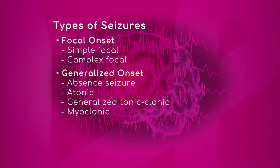Focal onset means that the seizure originates in one part of the brain, and depending on which part of the brain that is, you will see a complex symptomatology or signs of that seizure. A complex focal seizure is a seizure that starts in a certain part of the brain and spreads locally, causing a discognitive state where the patient becomes unaware.